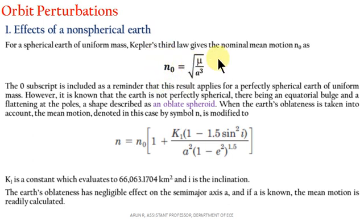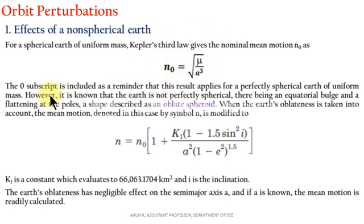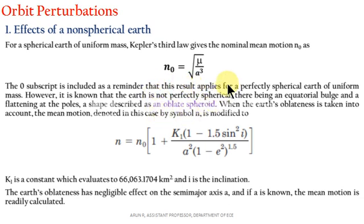According to Kepler's law, we can write n = √(μ/a³), where a is the semi-major axis. n is the mean motion, designated as n₀ because Earth is considered a perfect sphere with uniform mass. In practical cases, Earth is not a perfect sphere — it has bulging at the equatorial region and flattening at the poles. This shape is generally termed as an oblate spheroid.